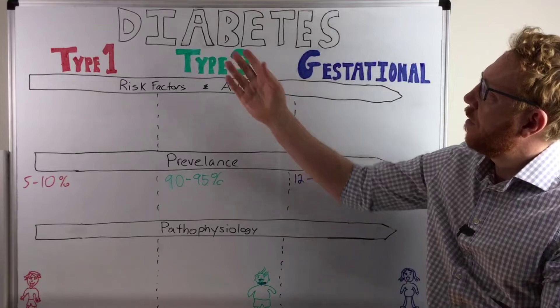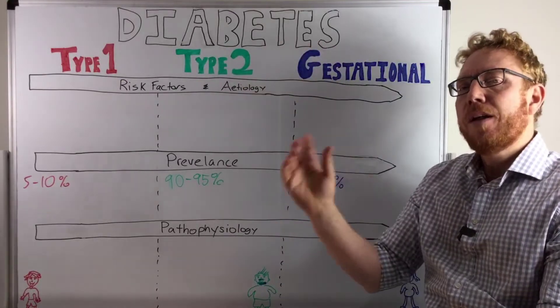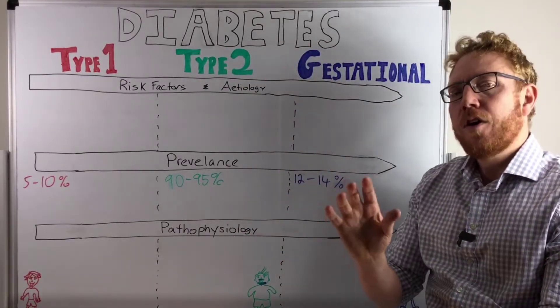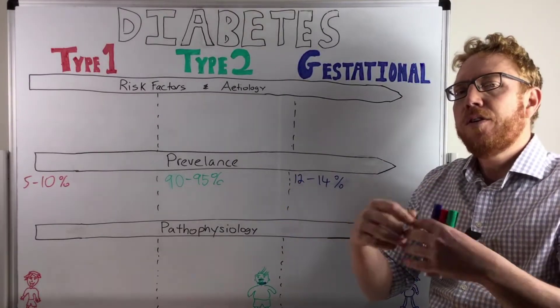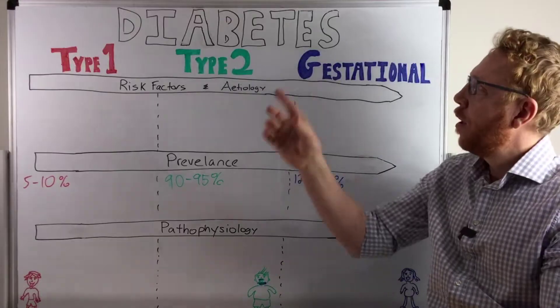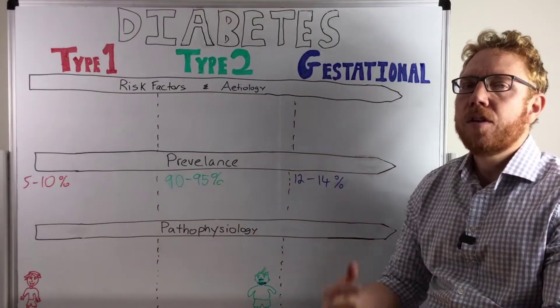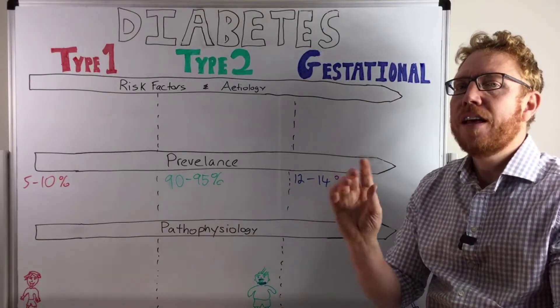Starting off with the definition of diabetes, diabetes mellitus is the term we're referring to. Diabetes just essentially means to siphon and it's referring to high amounts of urine. Mellitus means sweet. So it's essentially a lot of urine that is sweet.